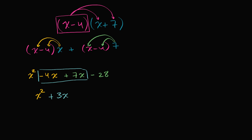So positive three x. And, of course, we have the minus 28. And we're done. We just multiplied these two binomials just using the distributive property twice.